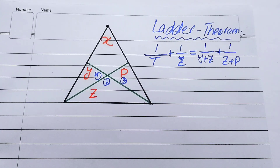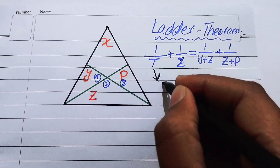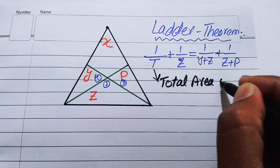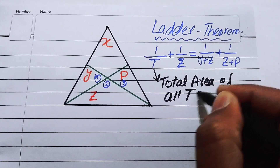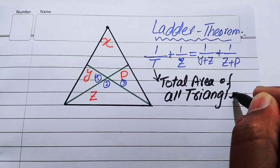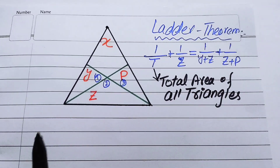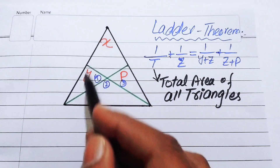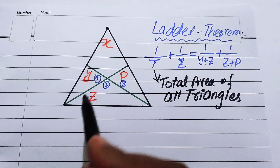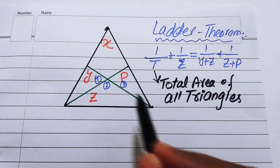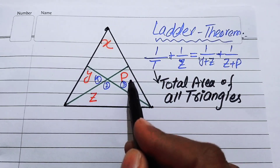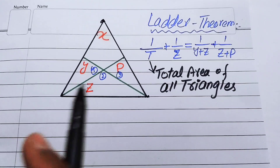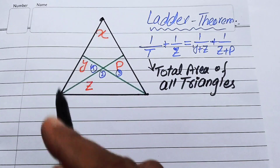Here, t stands for the total area of all triangles — you just add the total area of all triangles together. We can see that there are four triangles: the biggest triangle and three smaller triangles, giving us four triangles total. So t denotes the area of all triangles.